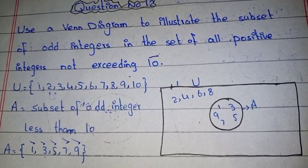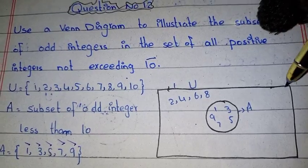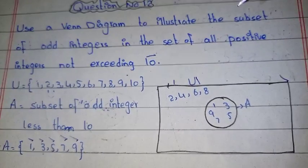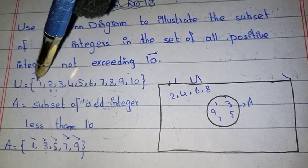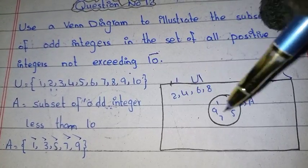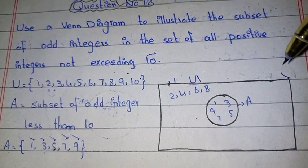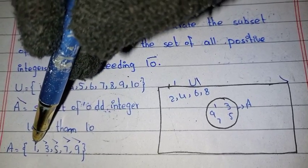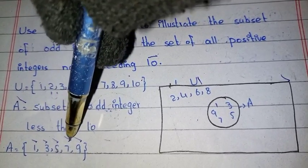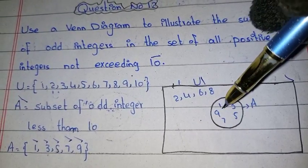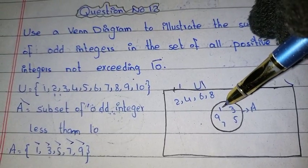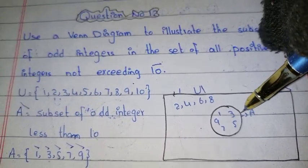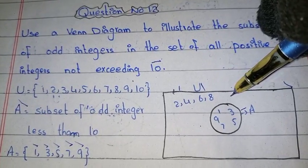To draw the Venn diagram, we first make a rectangle and label it U, placing all integers from 1 to 10 inside. Then we draw a circle inside representing set A, containing the odd integers: 1, 3, 5, 7, 9. This circle is set A and the rectangle is the universal set.